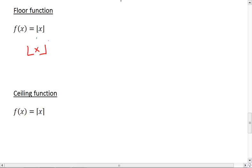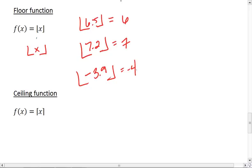Whenever I plug in for x, say 6.5, the floor function picks the closest integer below it - in this case, 6. For 7.2, the floor function gives 7. For negative 3.9, it gives negative 4.